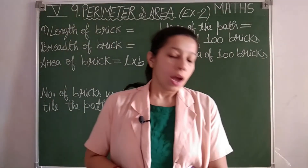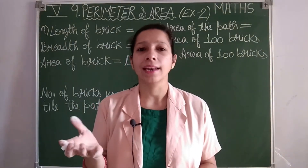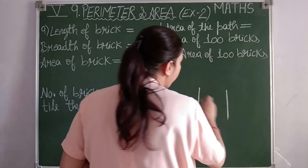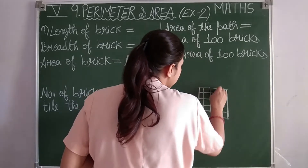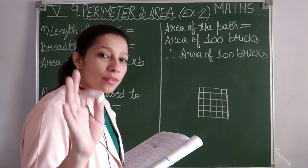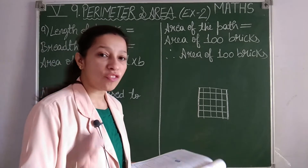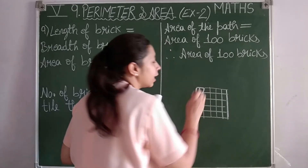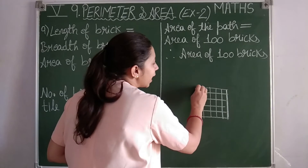Question number nine: 100 bricks of length 24 centimeters and breadth 15 centimeters are used to tile a path. Find the area of the path. The length and breadth of the path itself are not given — only the dimensions of the brick used. So we will find the area of one brick first.